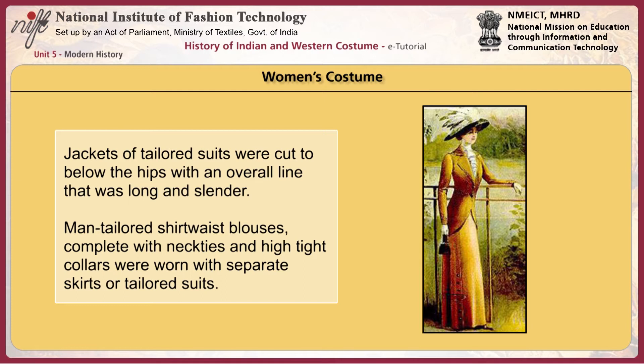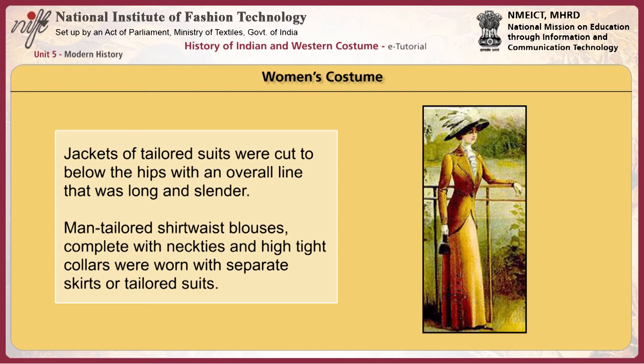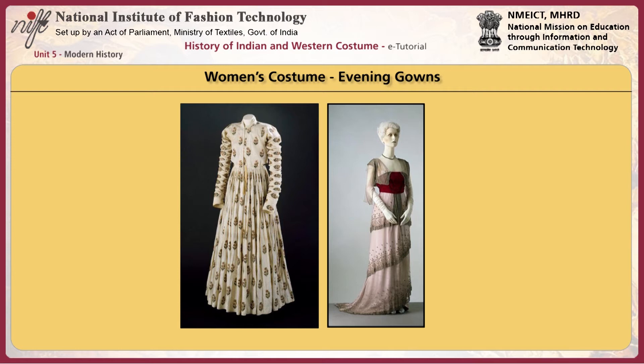Paul Poirot designed exotic tunic styles like the Minaret tunic. Jackets of tailored suits were cut to below the hips with an overall line that was long and slender. Man-tailored shirtwaist blouses, complete with neckties and high tight collars, were worn with separate skirts or tailored suits. For evenings, both empire revival and oriental influences were evident. Evening dresses had tunics of layers of sheer fabric placed over heavier fabric. Trains were popular. Sleeves were short, often kimono style and of sheer fabric.